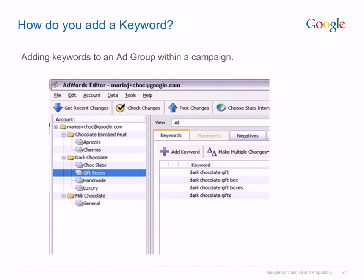If you wish to add keywords to an ad group, first select your chosen ad group within the appropriate campaign in the TreeView. Then click on the plus icon Add Keyword button located below the navigation tabs. Here we added the keyword Dark Chocolate Box to the Gift Boxes ad group within the Dark Chocolate campaign. If you wish to use a keyboard shortcut, press Ctrl plus K.